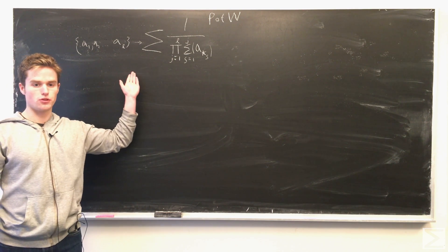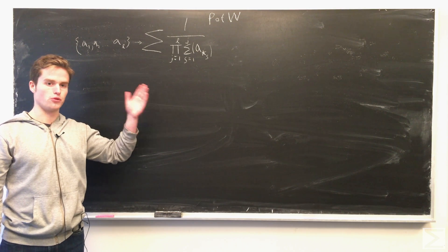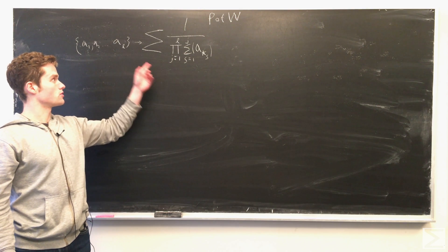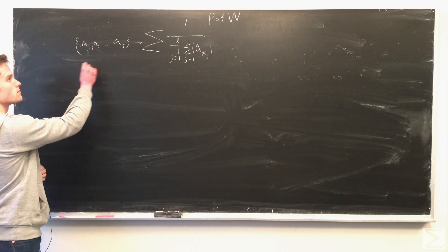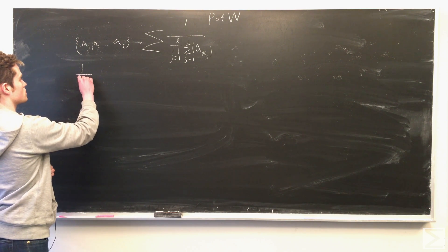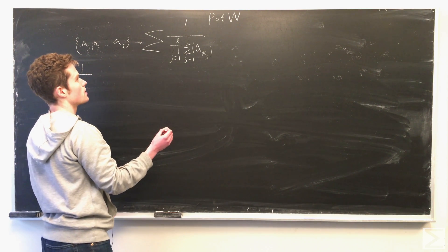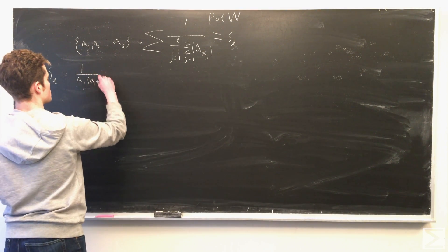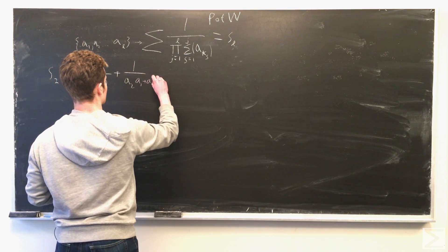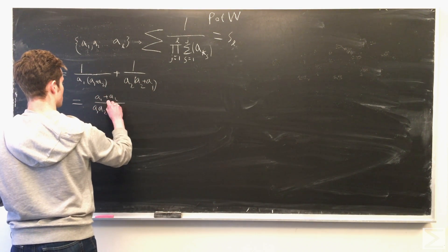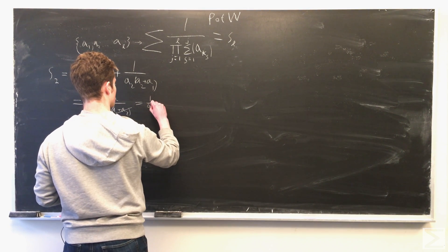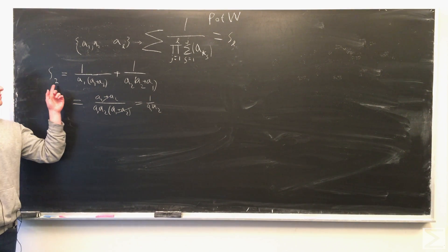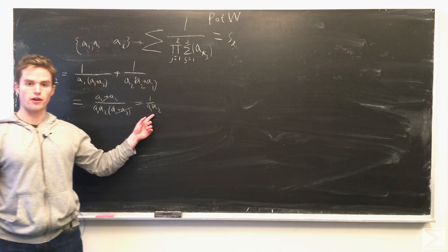So if the set was {1, 2}, all the possible permutations would be (1, 2) and (2, 1). Let's first calculate the sum for just L equals 2. For L equals 2, we see S₂ equals 1 over A₁ times A₂.